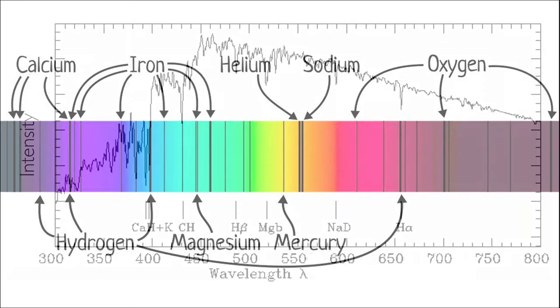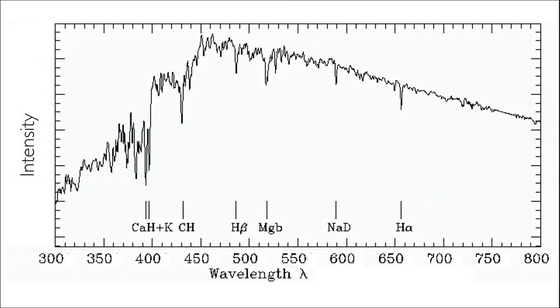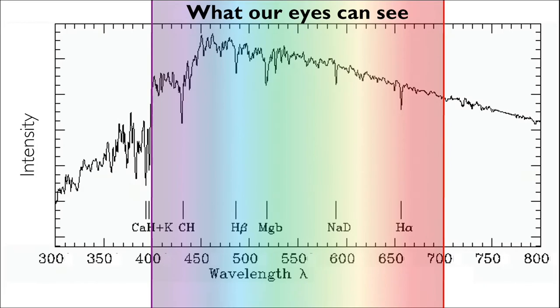Now if we were looking at the spectrum of this star, which of its Fraunhofer lines would not be visible to us? The absorption lines caused by calcium monohydride and potassium, abbreviated CAH plus K, occur at wavelengths that are too short for our eyes to see, so they'd be the ones invisible to us.